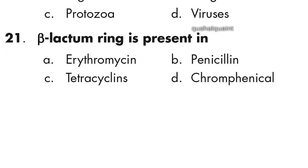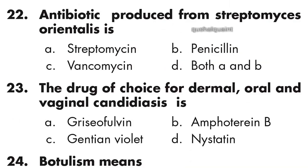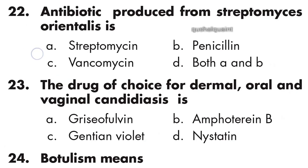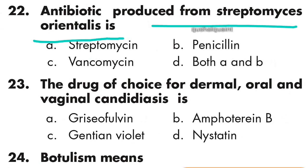Question 21: The beta-lactam ring is present in penicillin. Option B is right. Question 22: The antibiotic produced from Streptomyces orientalis is Vancomycin. Option C is right.